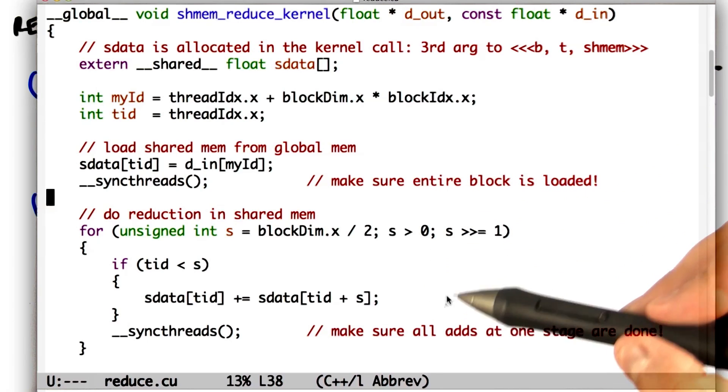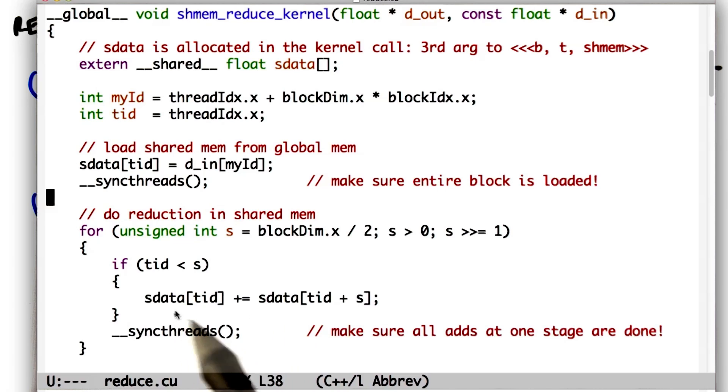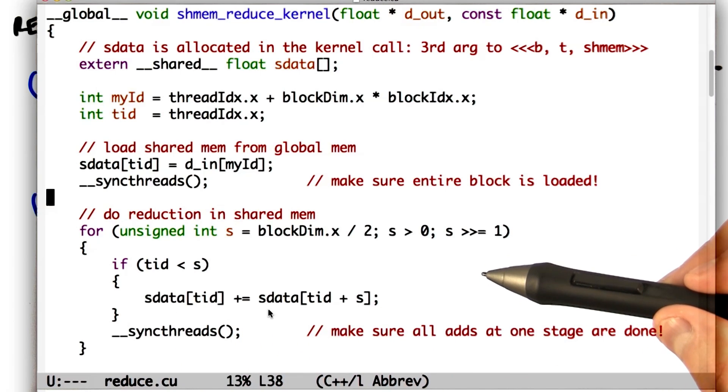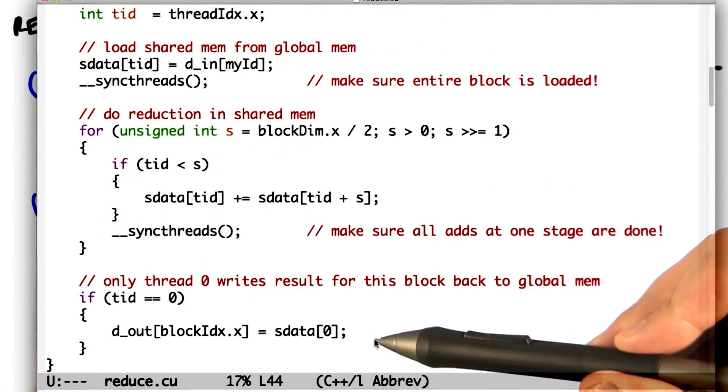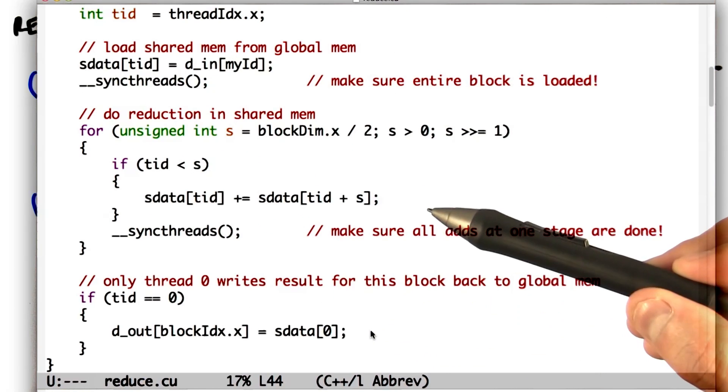Then all the further accesses here are from shared memory, this s data, as opposed to from global memory which we did last time. When we're done, we have to write this final value back to global memory again.